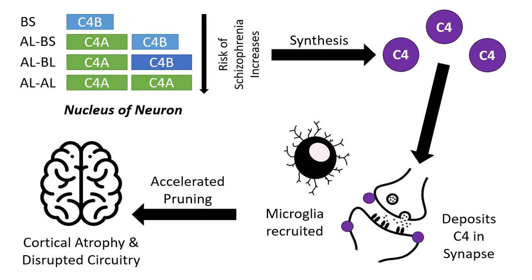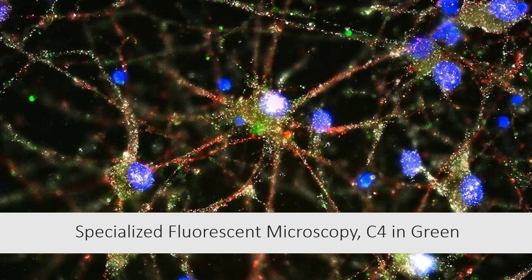C4 in the central nervous system normally assists with synaptic pruning, a normal neuromaturation process by which extra synapses are eliminated. This pruning, driven by C4, is typically active between childhood and early adulthood. C4 is deposited in the synapse, which promotes the recruitment of microglia. Under pathologic circumstances, pruning is accelerated and there is resultant cortical atrophy and disrupted circuitry. As evidence builds, schizophrenia is looking more like a neurodevelopmental disorder rather than a neurodegenerative disorder, which was the historical thought. This image shows a specialized form of fluorescent microscopy showing neurons and synapses, with C4 depicted in green.